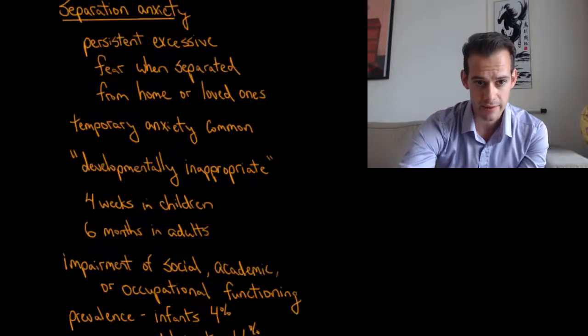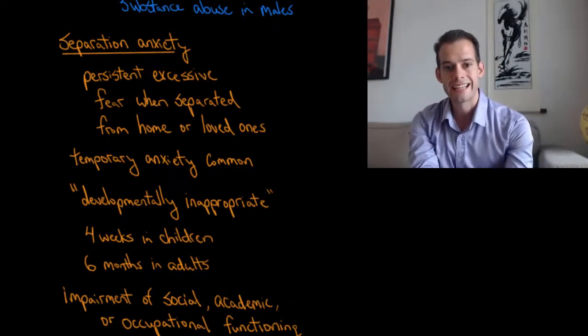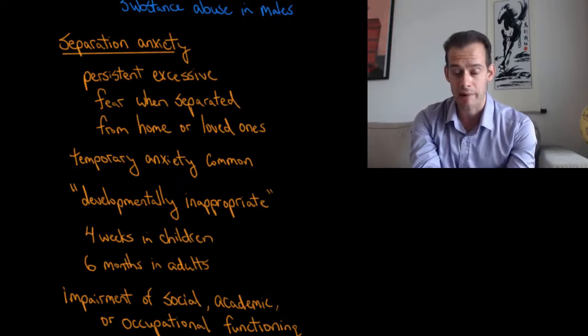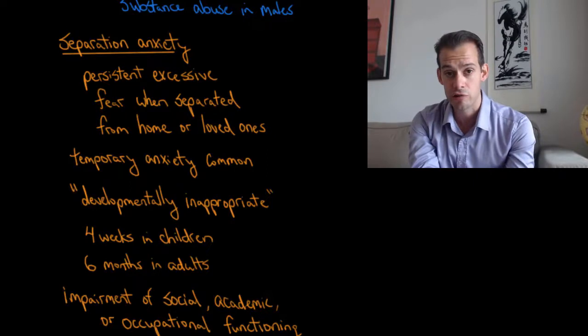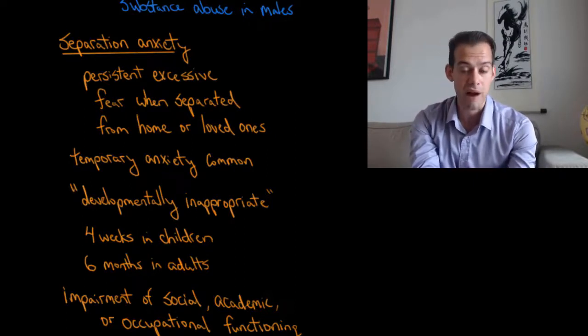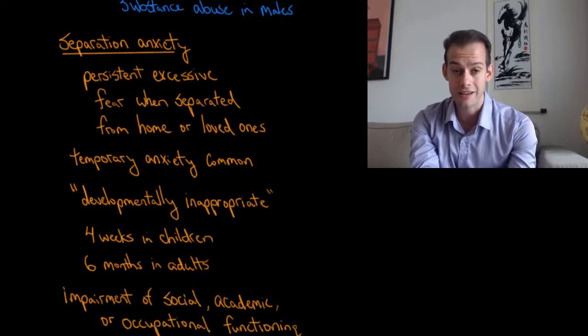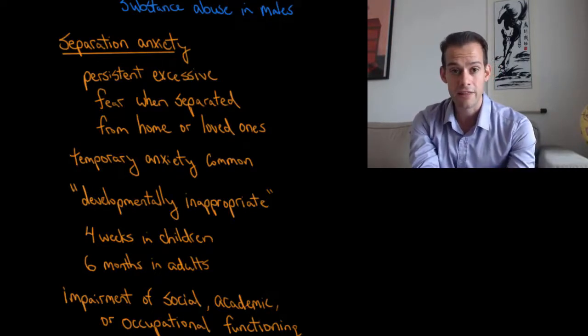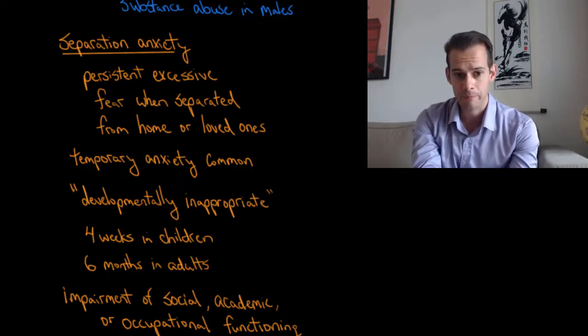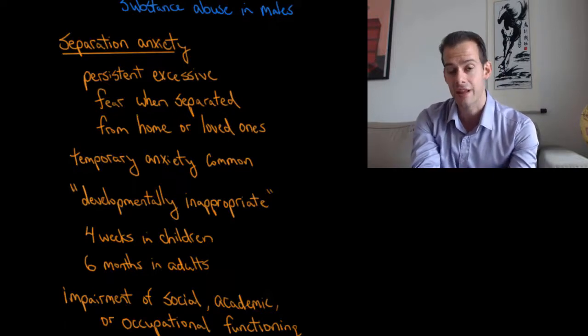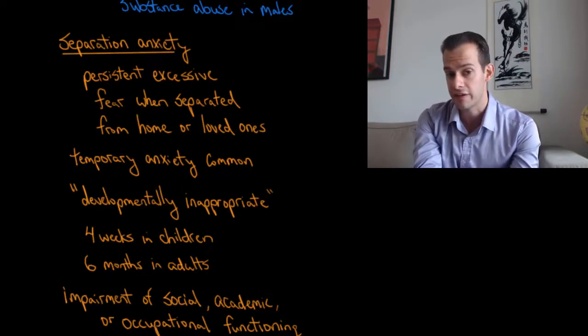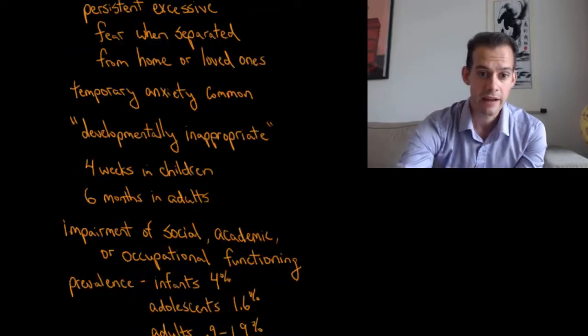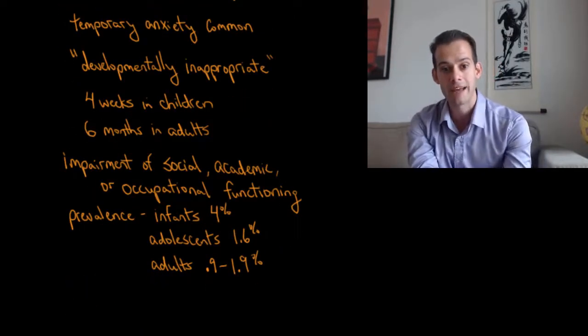Okay and lastly we have separation anxiety. And so this refers to a persistent and excessive fear when separated from home or from loved ones. Now it is common for there to be temporary anxiety in these situations and this is especially true in infants. So when infants are separated from their mom or their primary caregiver then they often experience anxiety. But this usually doesn't last particularly long. And so in the case of separation anxiety this anxiety occurs but it's considered to be either of an extended duration or what's called developmentally inappropriate. And so this might be children who are past the age where they should have this level of anxiety when separated from their mother and yet they're still experiencing it. And so if this lasts for four weeks in children or six months in adults then it might warrant a diagnosis of separation anxiety. And this anxiety leads to impairment of social, academic, or occupational functioning.